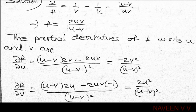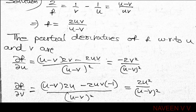Then we take the partial derivative of f with respect to u. Using the quotient rule: ∂f/∂u = [(u minus v)(2v) minus (2uv)(1)] / (u minus v)², which simplifies to minus 2v² / (u minus v)².